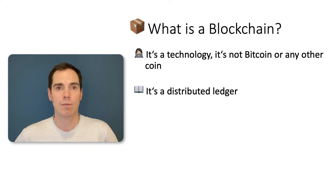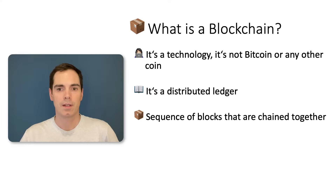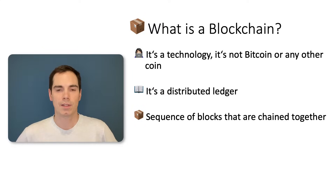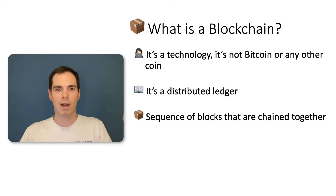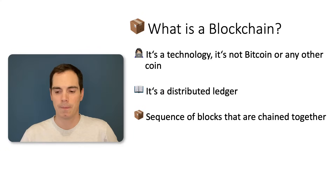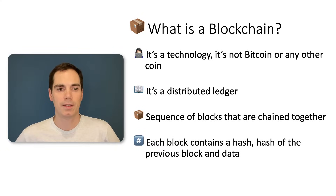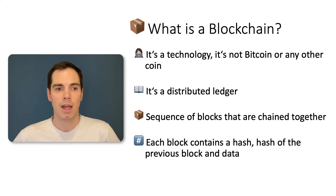A blockchain is a distributed ledger where all kinds of information are stored. It contains a sequence of blocks that are chained together — you can really think of a chain of blocks. The special thing about it is that each block contains a hash of the previous block and some data.